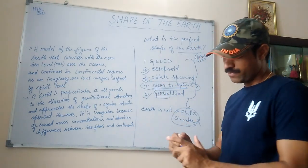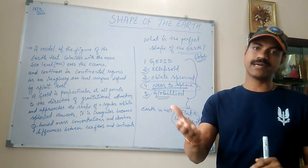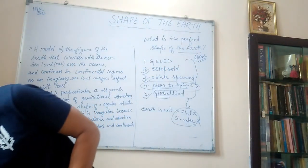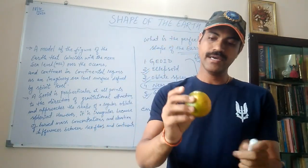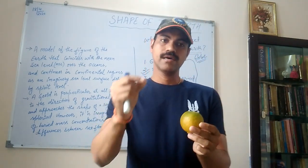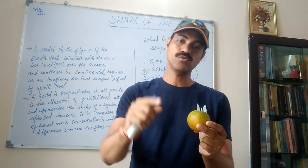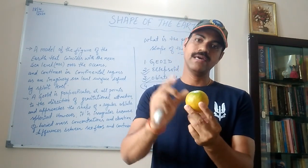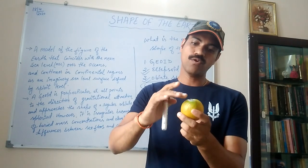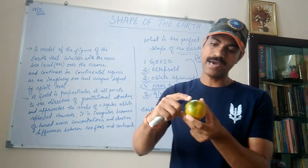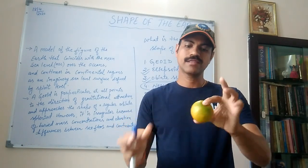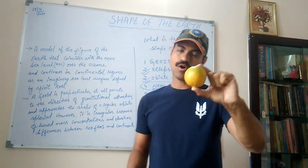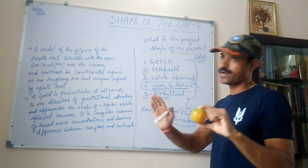The Earth is an Oblate Spheroid — this is a geometrical shape. If you look at the shape of the Earth, it resembles an orange. The Oblate Spheroid means it is tapered from the top — flattened at the poles — making it very similar in shape to an orange.